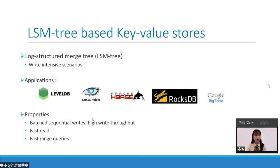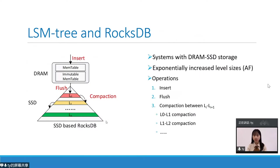LSM trees offer high write throughput by batching writes in memory, and offer faster read and range queries with lifetime compaction. RocksDB is composed of a DRAM component and an SSD component. LSM tree levels on SSD are exponentially increased from Level 0 to Level 6 at the amplification factor of 10. Write requests first insert into memory tables in DRAM, then flush to SSD, and finally do level-by-level compactions. The operations of RocksDB mainly include insert, flush, and compaction of multiple levels.